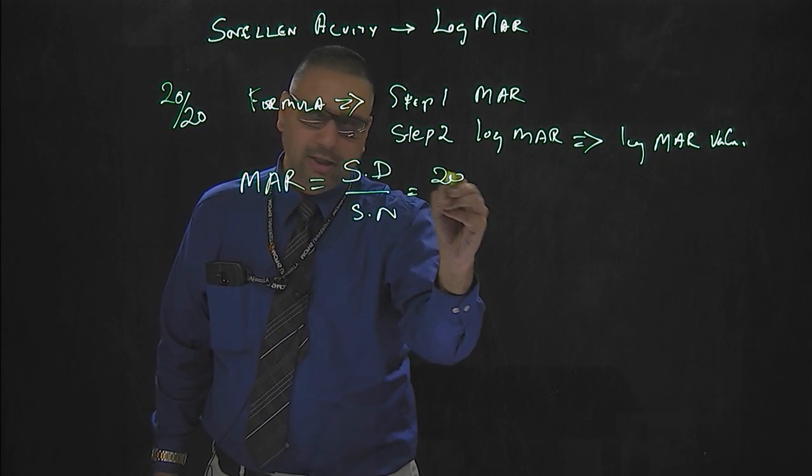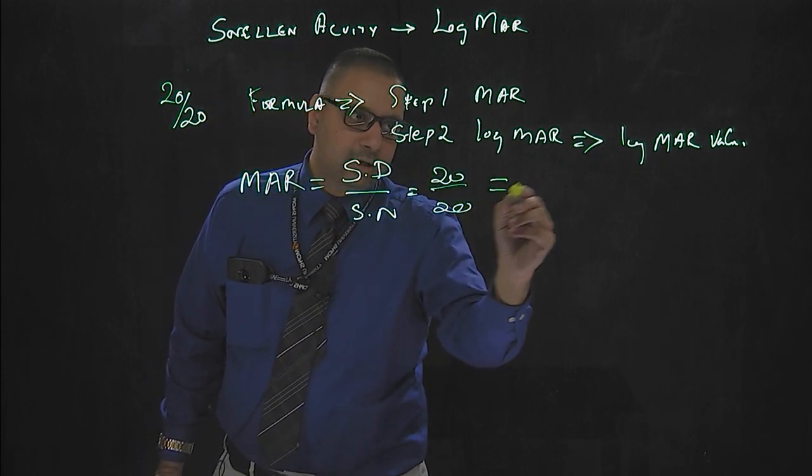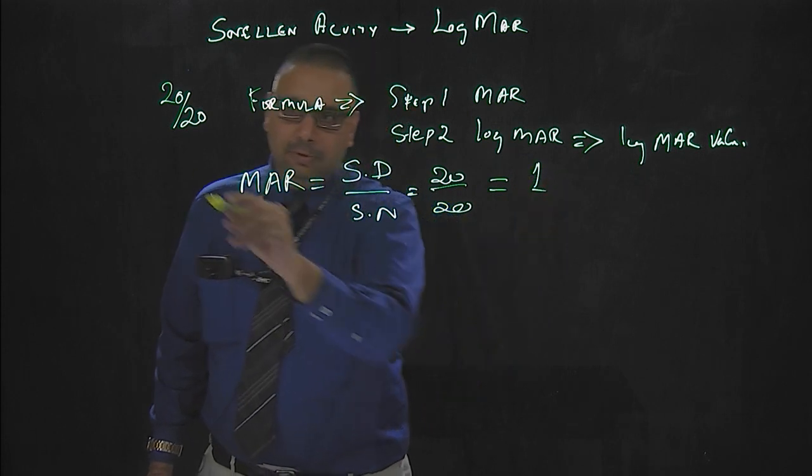The Snellen's denominator is 20, the Snellen's numerator is 20. So the MAR here is 1. This is step 1.